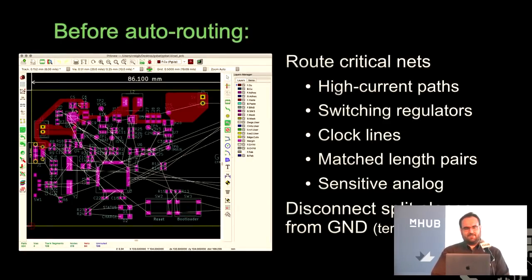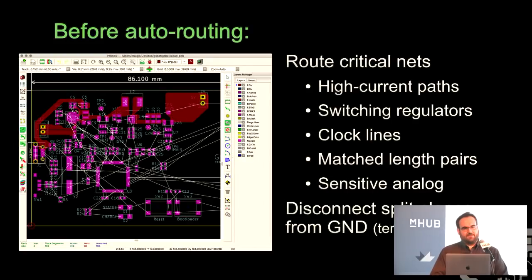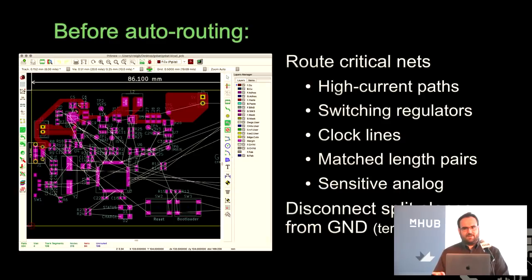This is a critical step: before autorouting, even on a simple two-layer board with a micro and no sensitive analog, I typically want to route high current paths first — here you can see the red large traces at the top of this battery charging board. If you have switching regulators, the datasheet usually tells you how to route it, so follow that first. Clock lines if they're sensitive, matched length pairs (FreeRouting doesn't support that, but other routers do), and sensitive analog. Another gotcha is split planes — if you have digital ground and analog ground you want to keep separate, disconnect those nets before autorouting. Otherwise it'll connect them in places you didn't plan. After autorouting, reconnect and tie them back together.